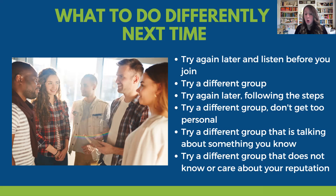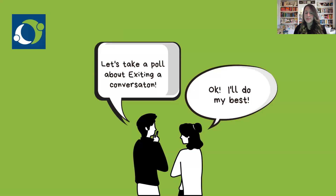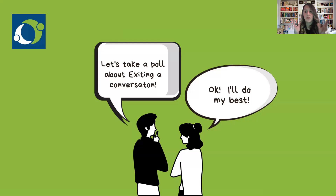What can you do differently if you're constantly being rejected? Try again later and listen before you join. Wait for something you can contribute. Try a different group or different friends. Follow the steps for entering a conversation — look at part one. Try a group talking about something you know and are passionate about. Find groups with similar common interests. Try a different group that doesn't know your reputation.